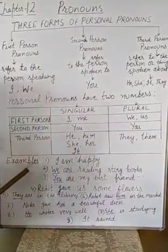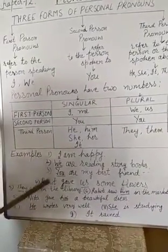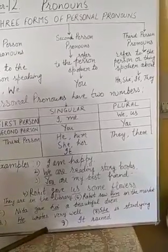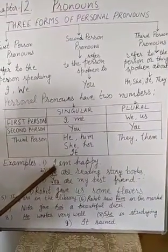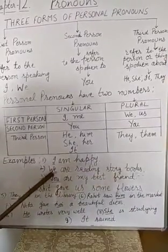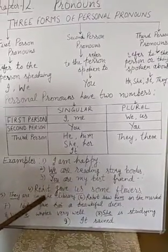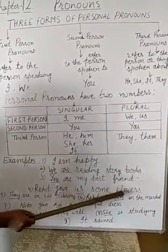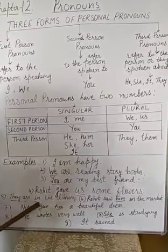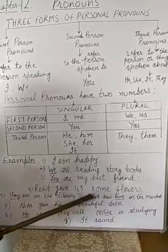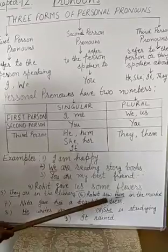Now children, I am going to read these sentences in which I have used personal pronouns. I am happy — I. We are reading books — we is a pronoun. You are my best friend — you. Rohit gave us some flowers — us is a pronoun. They are in the library — they. Rohit saw him in the market — him. Neeta gave her a beautiful dress — her.